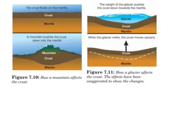Mountains and glaciers push the crust into the mantle because of their weight. Then the crust rises back up if the glacier melts or the mountain erodes.